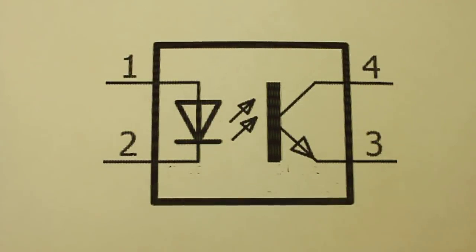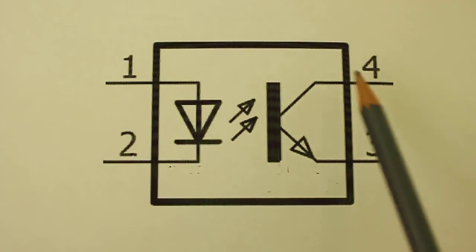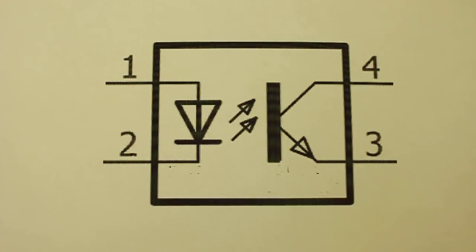Internally, the optocoupler is made with a light emitting diode or LED and a photo transistor. As you know, a transistor can be used as a switch.